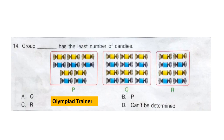Question 14: Group dash has the least number of candies. Least means the smallest among those given. Box P has 10 candies, box Q has 12 candies, and box R has 8 candies. So the least is R. R is in option C, so option C is the correct answer.